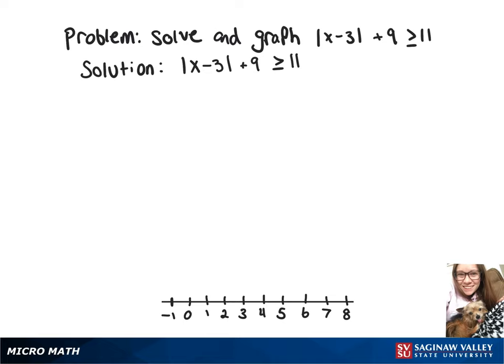To solve and graph the absolute value of x minus 3 plus 9 is greater than or equal to 11, we're going to start by subtracting 9 from both sides. That's going to give us the absolute value of x minus 3 is greater than or equal to 2.